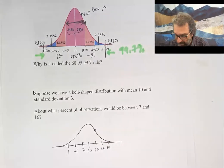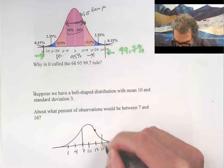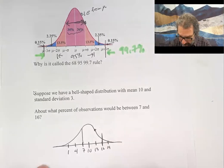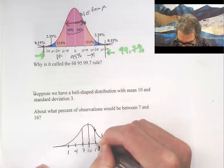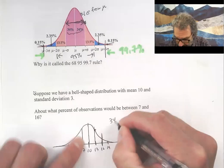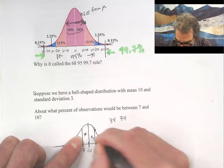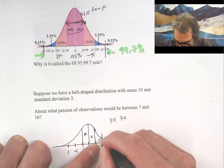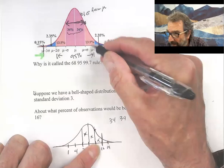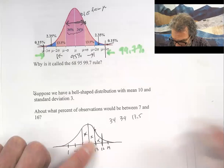Then it says what percent of observations would be between 7 and 16, which is here. So imagine taking the regions in question: 34 is here, 34 is here, and then over here it says 13.5. We'll go ahead and add those up.